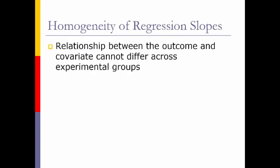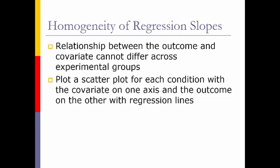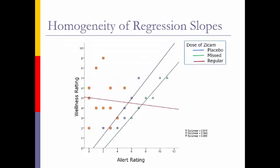Homogeneity of regression slopes: we're looking at whether the relationship between the outcome and the covariate differs across groups. An easy way to check is to plot a scatter plot with the covariate on one axis and the outcome on the other, using regression lines. For our Zycam example, what we want is parallel lines. It looks like we do not meet the homogeneity of regression slopes assumption because the regular dose line is not parallel to the other two. You can see this visually without running too many tests, preserving your statistical power.